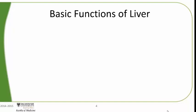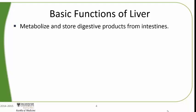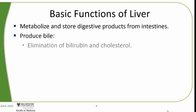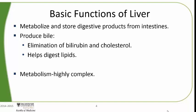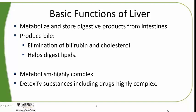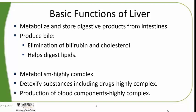The liver is a highly complex organ with many functions. One of them is to metabolize and store digestive products from the intestines. Another is to produce bile. What is the purpose of bile? It is a route for the body to eliminate bilirubin and cholesterol, and it helps digest lipids. The liver is also involved in many other complex metabolic functions — it detoxifies substances including drugs and produces blood components.